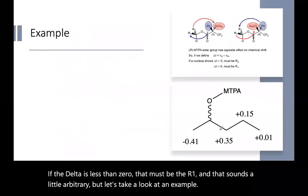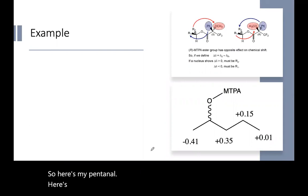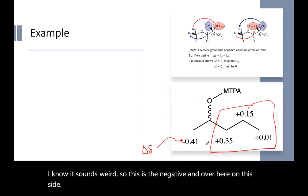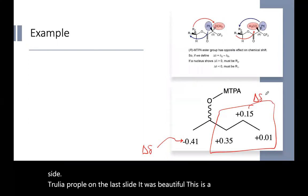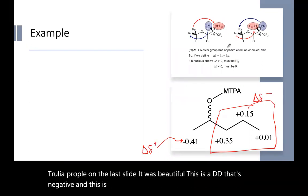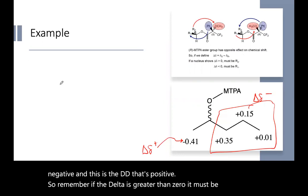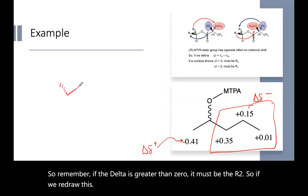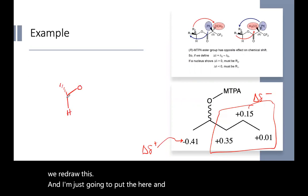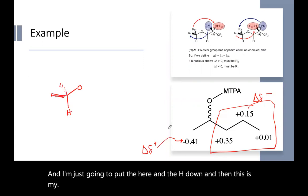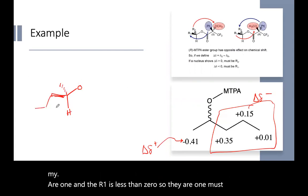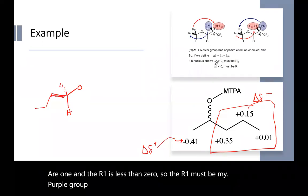So here's my pentanol. Here's the delta delta data. So this is the negative. And over here on this side, it's really a propyl. This is a delta delta that's negative. And this is the delta delta that's positive. So remember, if the delta is greater than zero, it must be the R2. So if we redraw this, and I'm just going to put the O here and the H down, and then this is my R1, and the R1 is less than zero. So the R1 must be my methyl group. And the methyl group is negative.